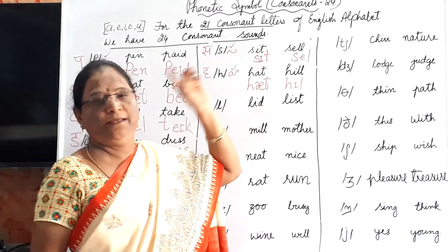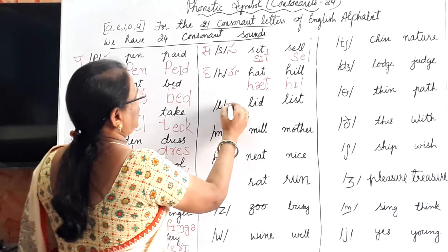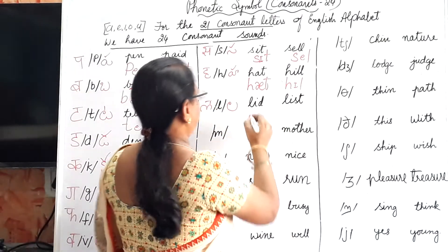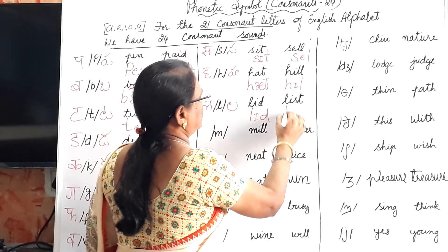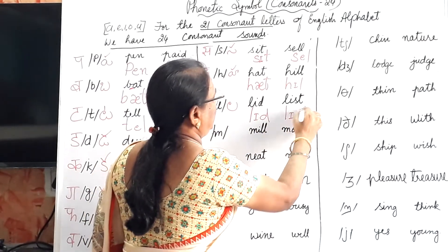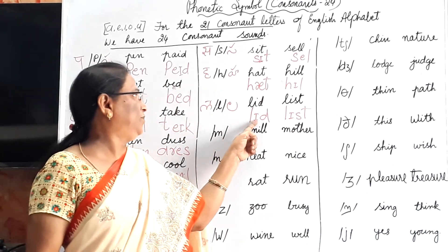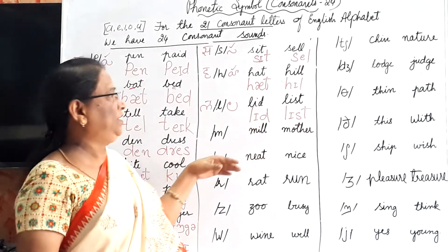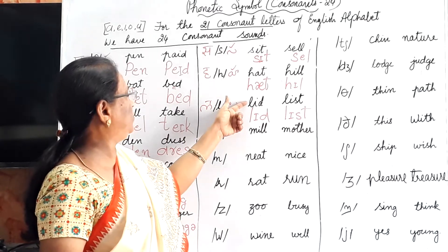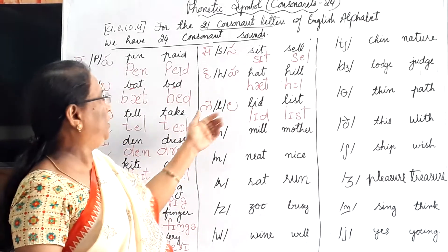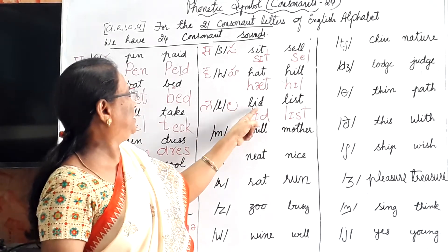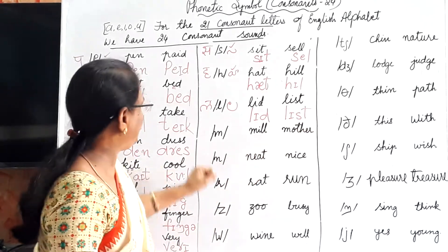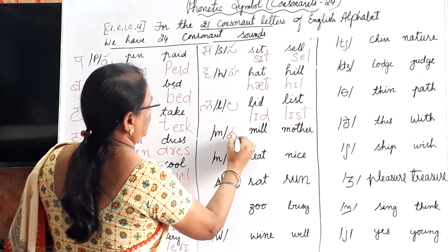L gives the /l/ sound. Lid, list. This is the /ɪ/ sound. L is L, D is D — there is no change with the consonant. The consonant letter is the same in the symbol. Lid, list — /ɪ/ sound. This is list.